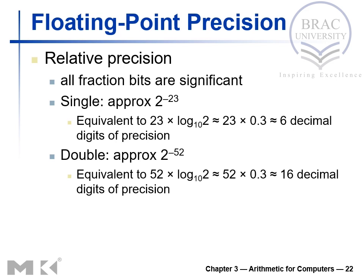Regarding floating point precision, all fraction bits are significant. In single precision we have 23 fraction bits, corresponding to 2 to the power minus 23. Working through the math, single precision covers approximately 6 decimal digits of precision, while double precision covers approximately 16 decimal digits of precision.